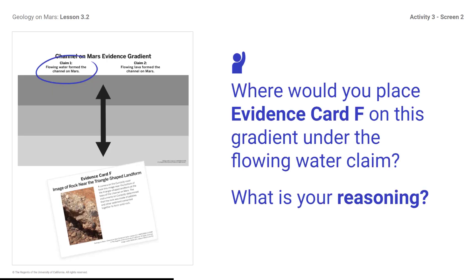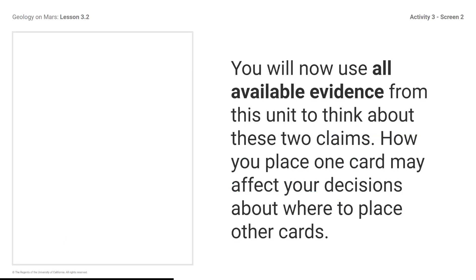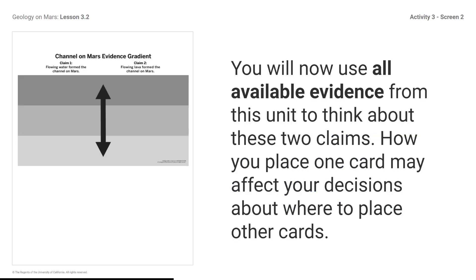Where would you place evidence card F on this gradient under the flowing water claim? What is your reasoning? You will now use all available evidence from this unit to think about these two claims. How you place one card may affect your decisions about where to place other cards. For instance, if the evidence on one card is more convincing than the evidence on another, you will want to change their placement in relation to each other.